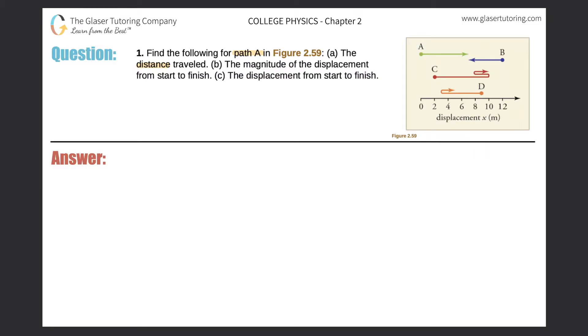So we have to calculate the distance traveled for path A. Remember a very straightforward definition for distance. I'll write it down here. Distance is basically a measure of the ground covered, measure of the amount of ground covered.